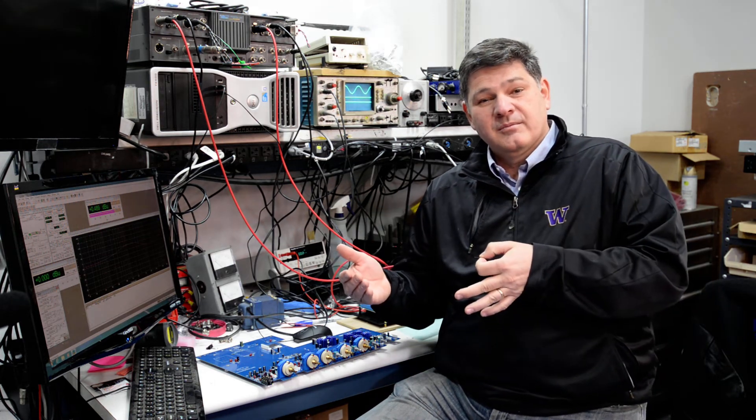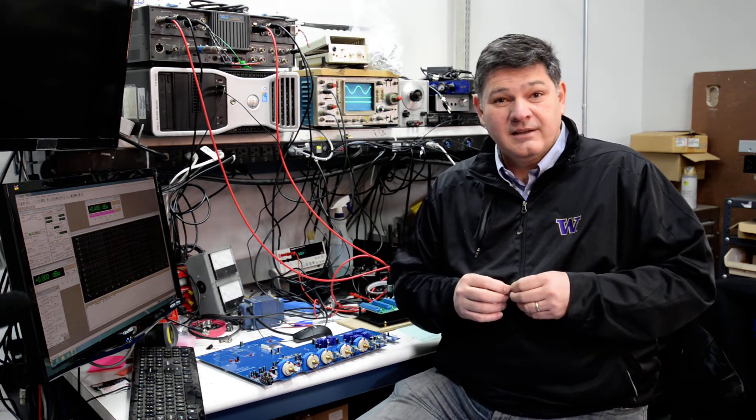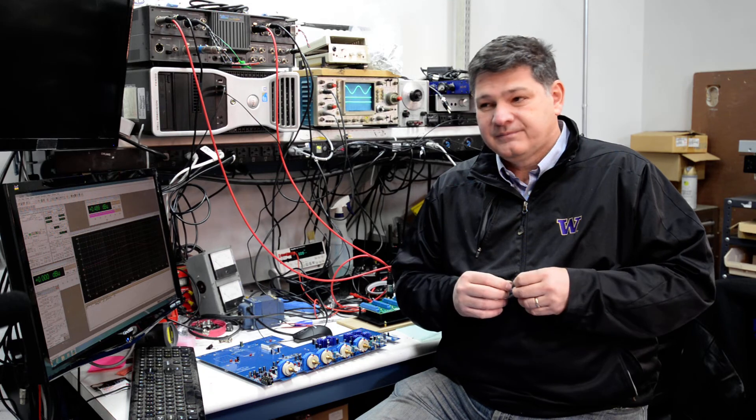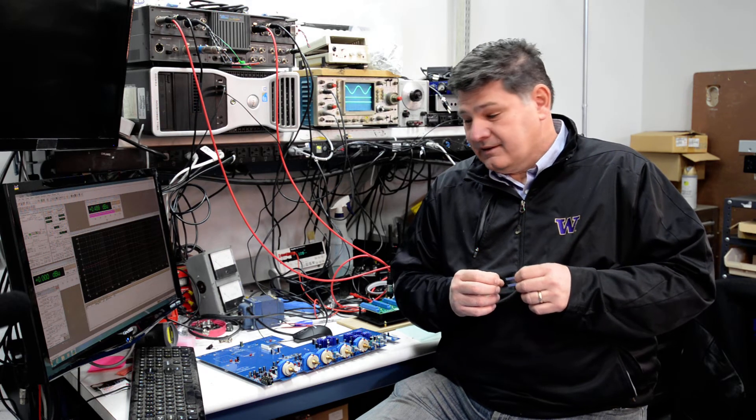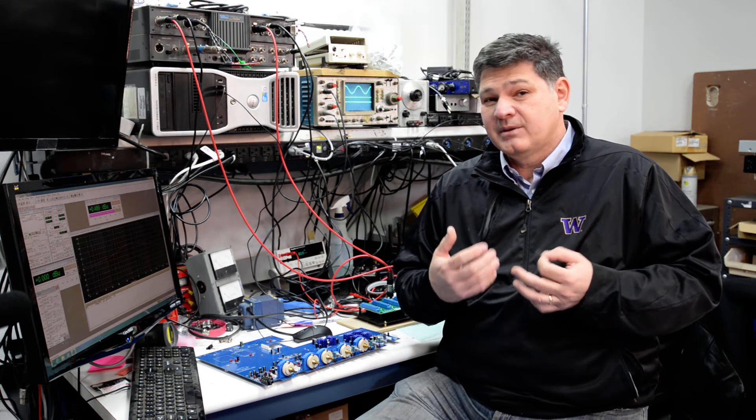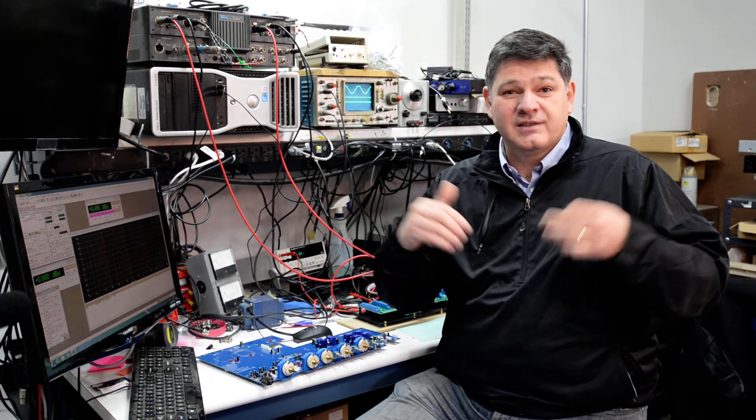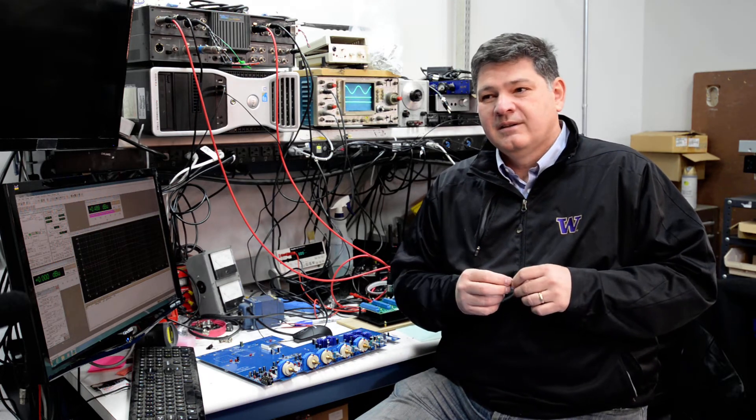We have one transformer designed for microphones and one transformer designed for line level inputs, which is a much hotter input. At the end of the day, it's placed inside a mu metal can, which is a specific type of material designed to protect from any parasitic noises getting into the transformer assembly.